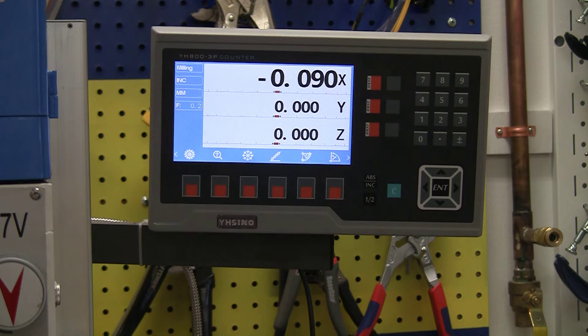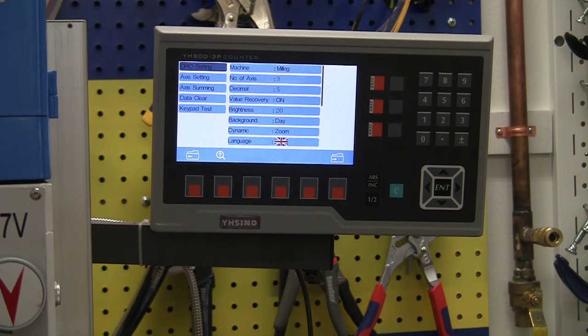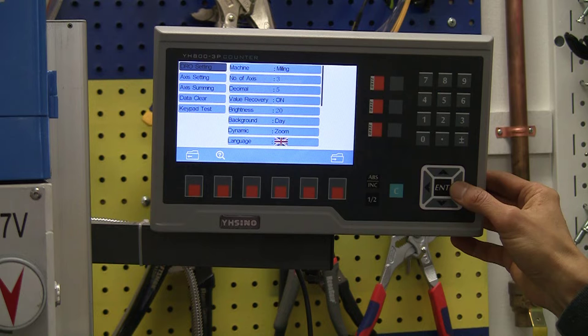Now here is the menu screen which helps tell you some of the basics, you know, milling machine, 3-axis, etc.